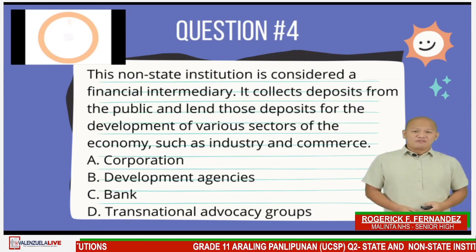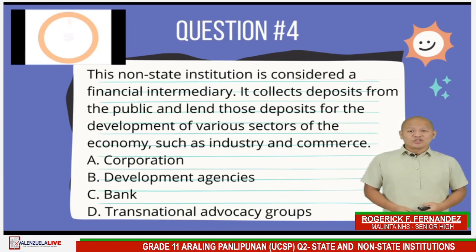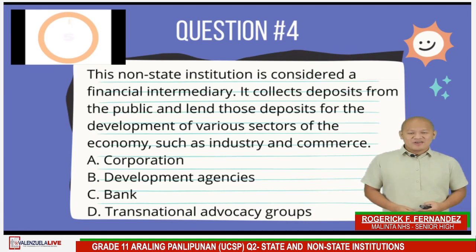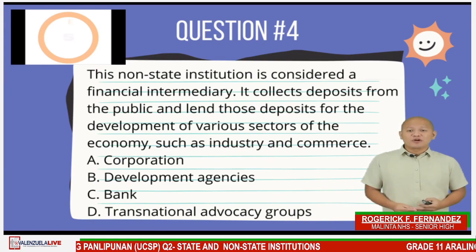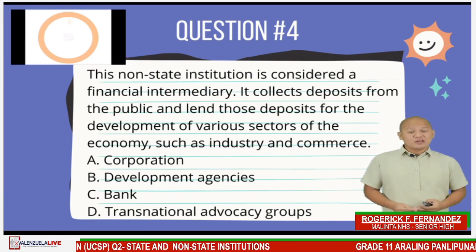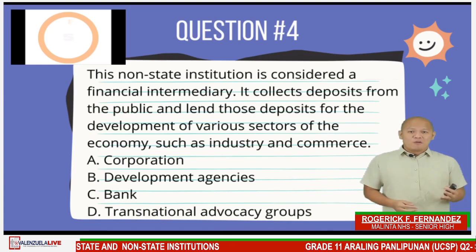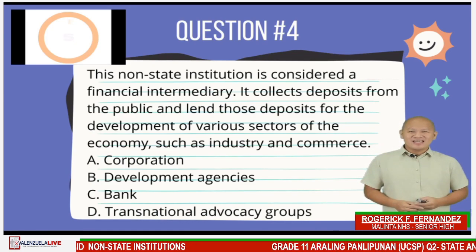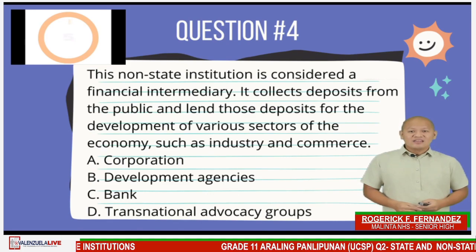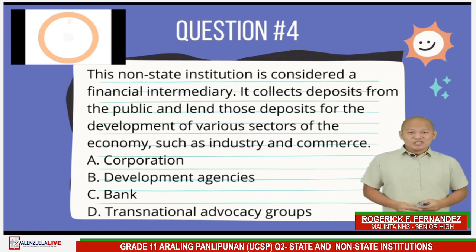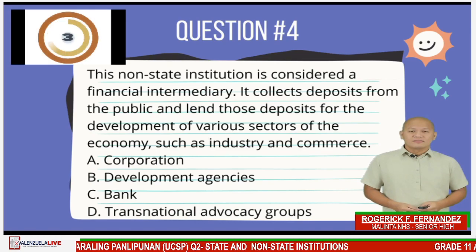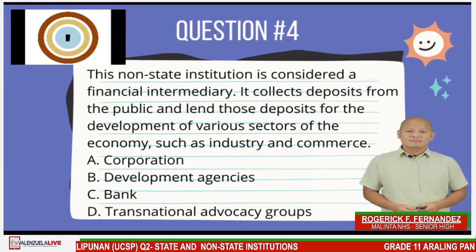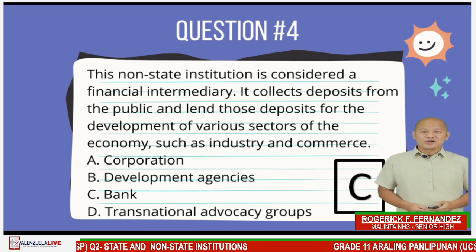Question number four: This non-state institution is considered a financial intermediary. It collects deposits from the public and lends those deposits for the development of various sectors of the economy, such as the industry and commerce. Letter A, Corporation. Letter B, Development Agencies. Letter C, Bank. Letter D, Transnational Advocacy Groups. The answer is Letter C.